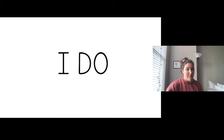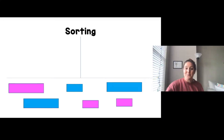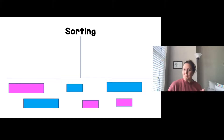I will show you first how to look at some pictures of objects and how to sort them. Then we'll do some together, and then you'll have a chance to sort by yourself. I'm looking at these pictures and thinking: how could I sort them into two groups?